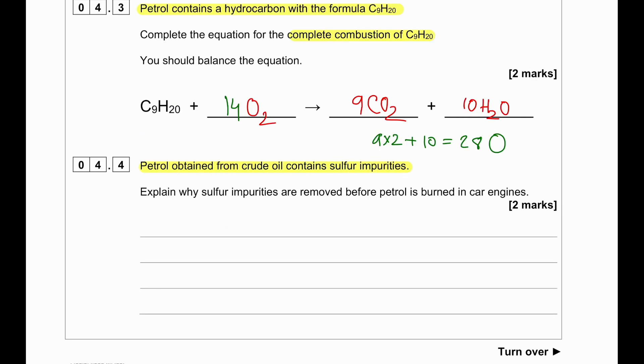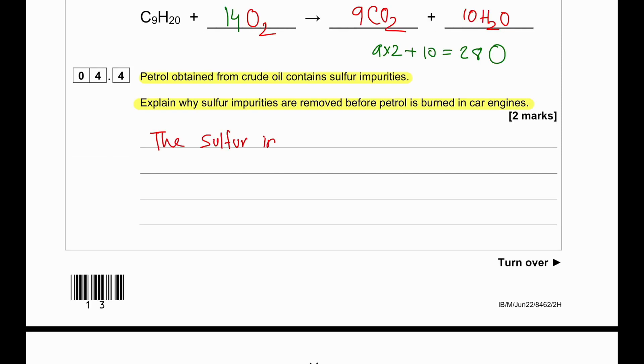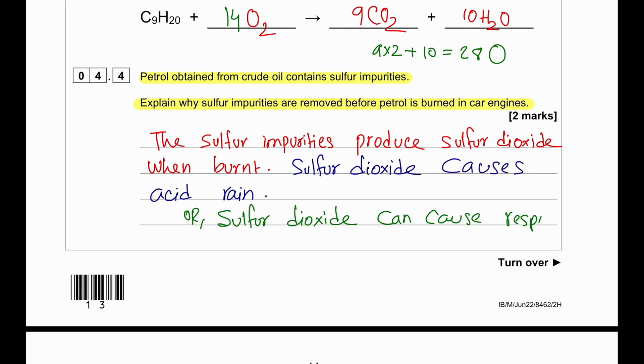Petrol obtained from crude oil contains sulfur impurities. Explain why sulfur impurities are removed before petrol is burnt in car engines. The sulfur impurities when burnt produce sulfur dioxide. Sulfur dioxide causes acid rain or can cause respiratory problems. That's why it needs to be removed.